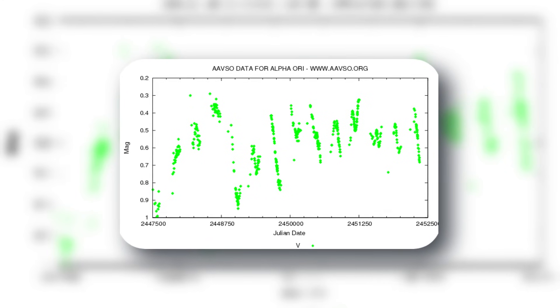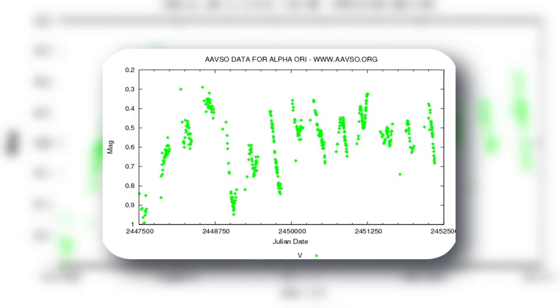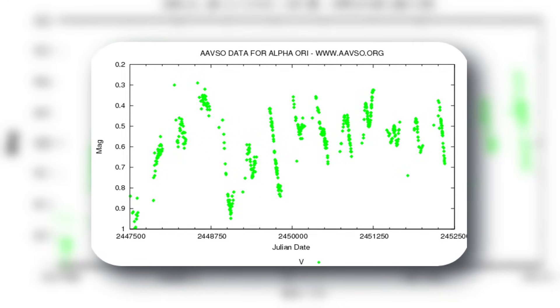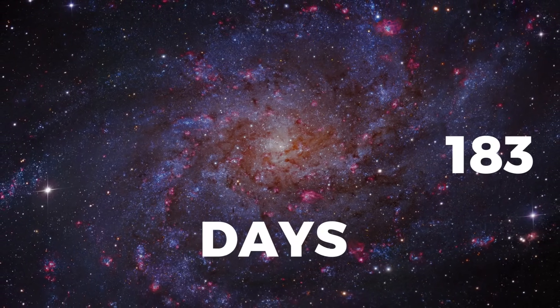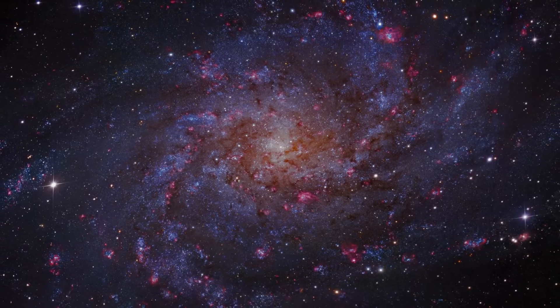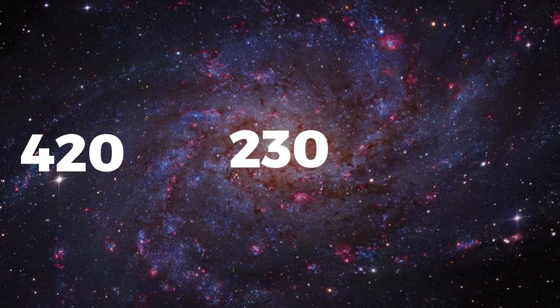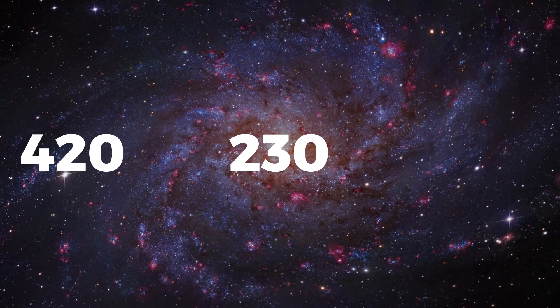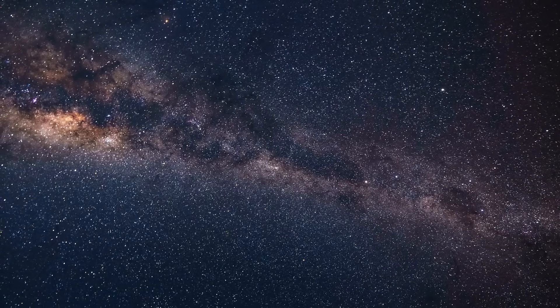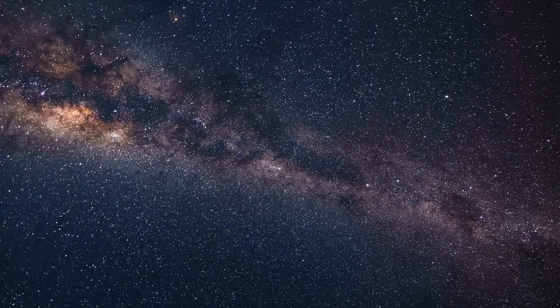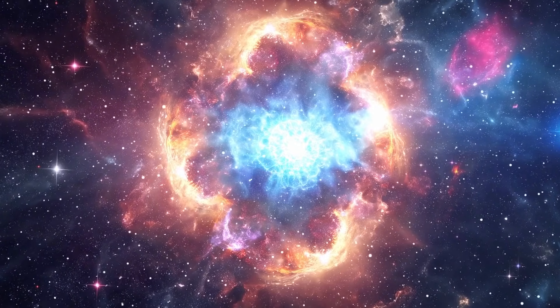Scholars have begun to examine Betelgeuse's patterns of variability, and their findings have left them in a state of shock. They have discovered four discrete periodic variations that happen around every 2200, 420, 230, and 185 days. Scientists think the largest period is fundamental, with the short intervals possibly acting as overtones, even if its genesis is still a mystery.